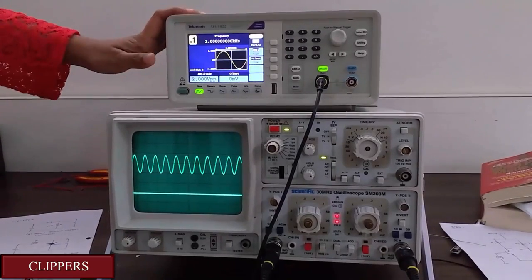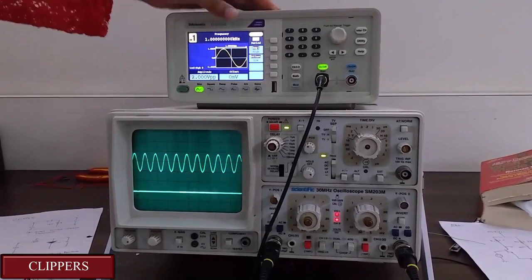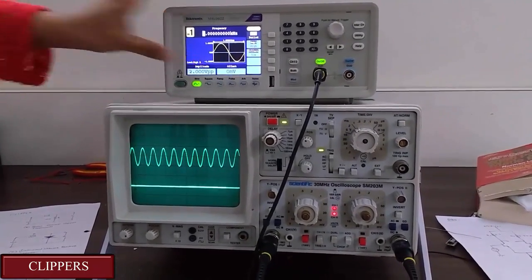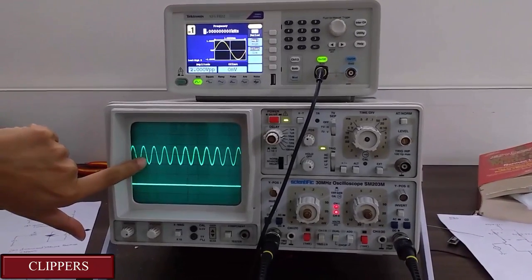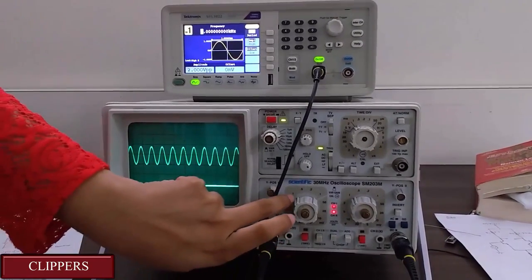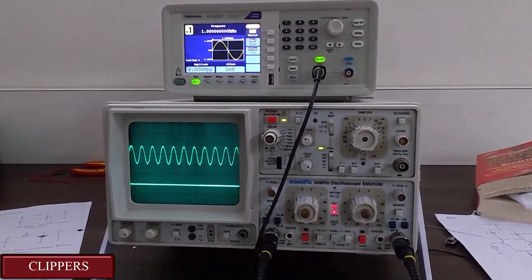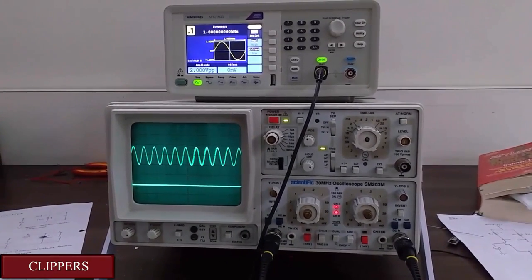As you can see this is the frequency generator. Here I have already set it for 1kHz and 2Vp2p. This is what we get as input. Here it is 1 and these are 2 blocks that is 2Vp2p. Now let's see the output for each of these clippers.